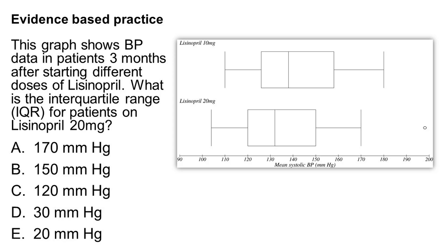The correct answer here is D. The interquartile range is 30 mmHg. This is called a box and whisker plot.